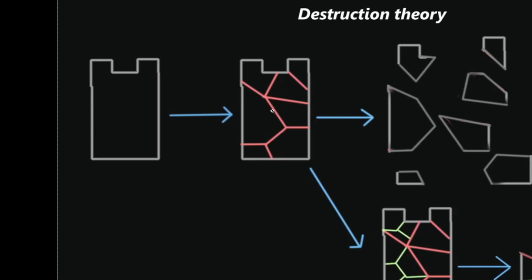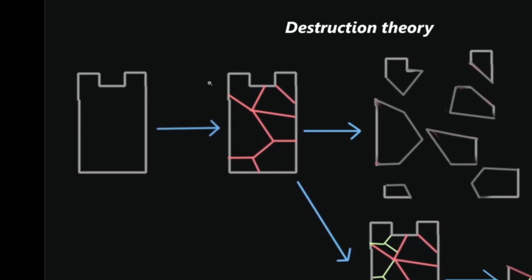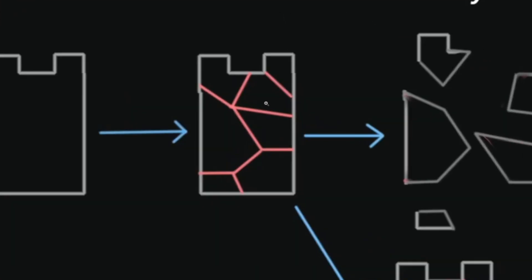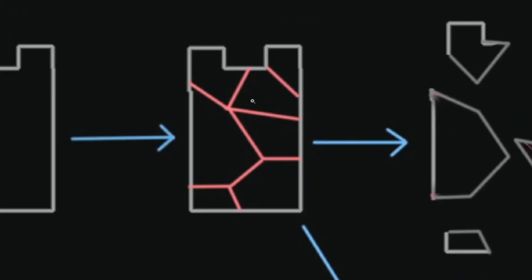How destruction works in 3D is that we cut the mesh into different pieces like this. We can have one, two, three, four, five, six, seven, eight chunks here.